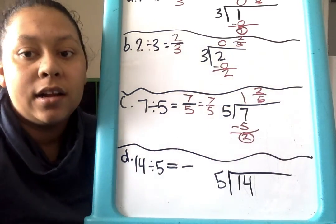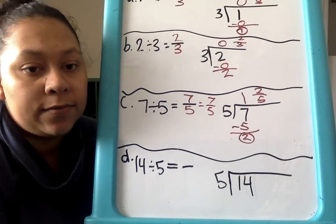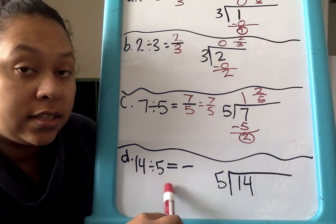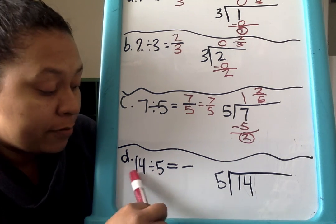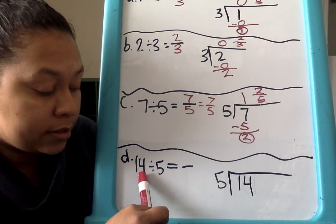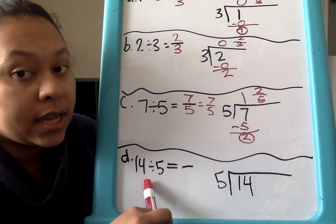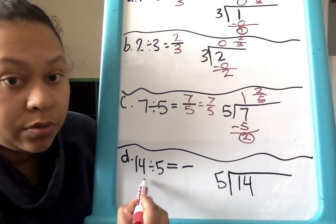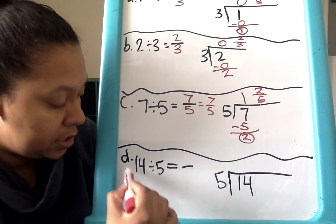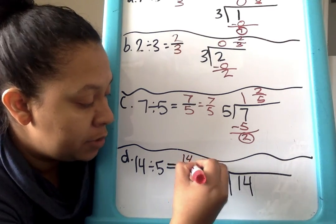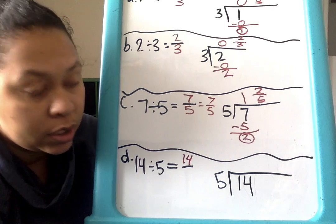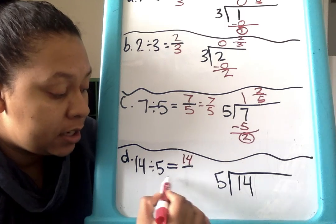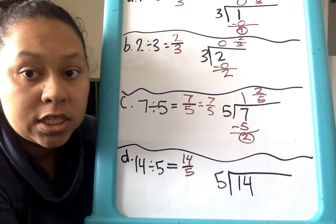Last problem, D. We have 14 divided by 5 — 14 candy bars divided into 5 friends. We have more than 5 candy bars because 14 is greater than 5, so each friend will get at least one whole candy bar and then some more. Let's rewrite the division problem as a fraction. We have 14 candy bars — 14 whole pieces — divided into 5 friends. Fraction bar into fifths as the denominator. So 14 fifths.